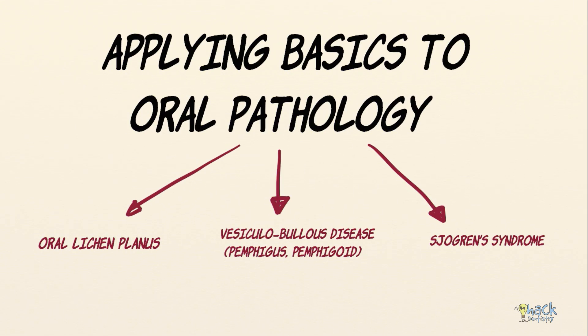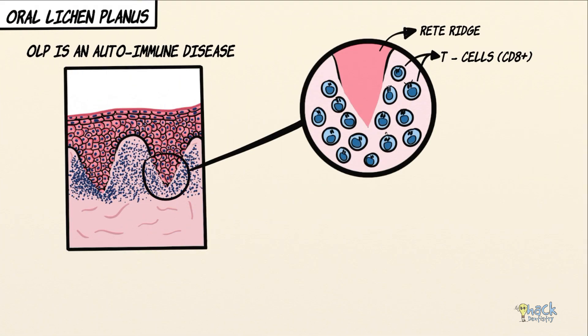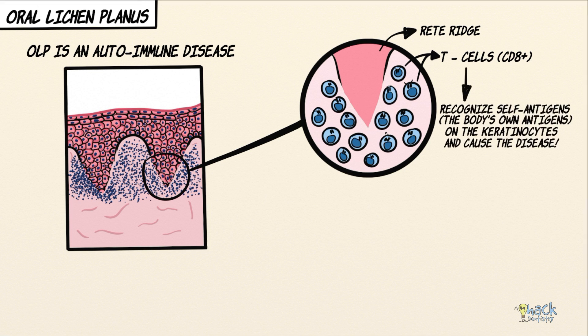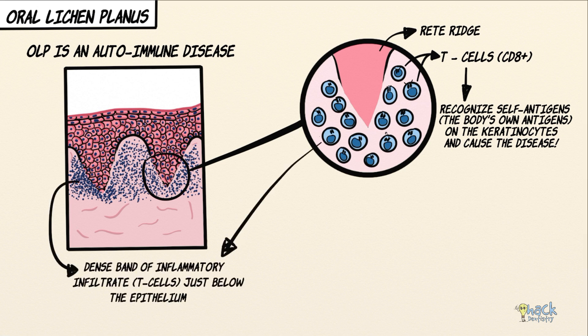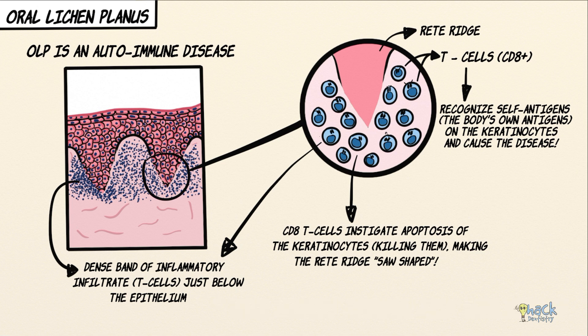In oral lichen planus, an autoimmune disease, the body's T cells recognize self-antigens on the keratinocyte, inducing the disease. Under the microscope, oral lichen planus shows a dense band of inflammatory infiltrate — mainly T lymphocytes — in the superficial part of the connective tissue immediately below the epithelium. The lymphocytes eat away the epithelium: CD8 T cells instigate apoptosis, destroying keratinocytes and making the epithelial cell ridges sawtooth shaped, referred to as basal cell degeneration.